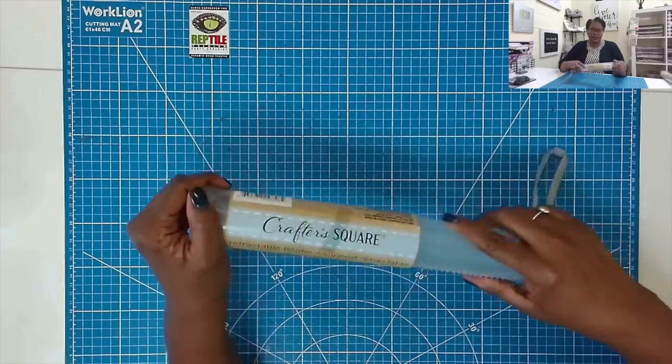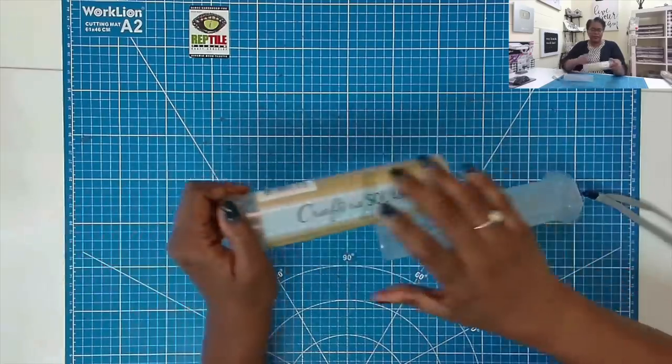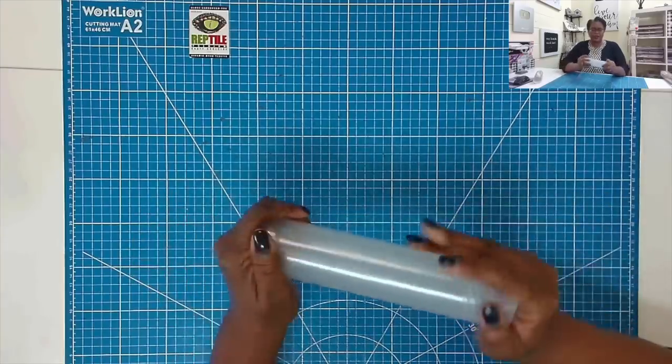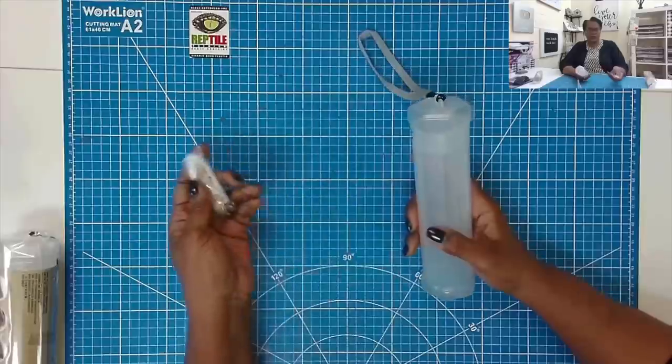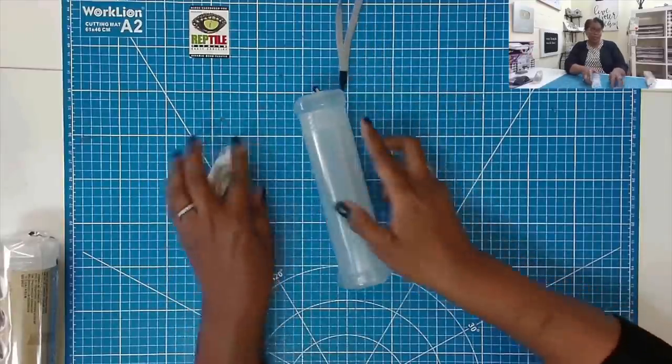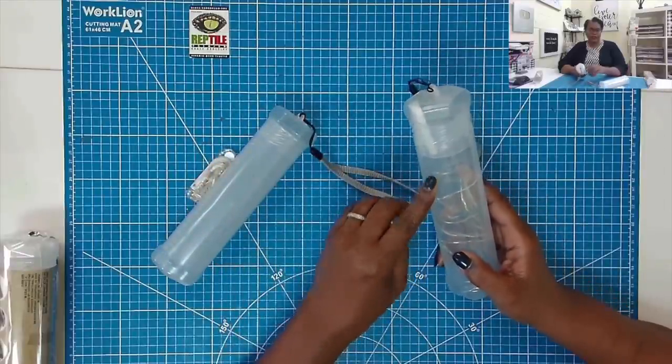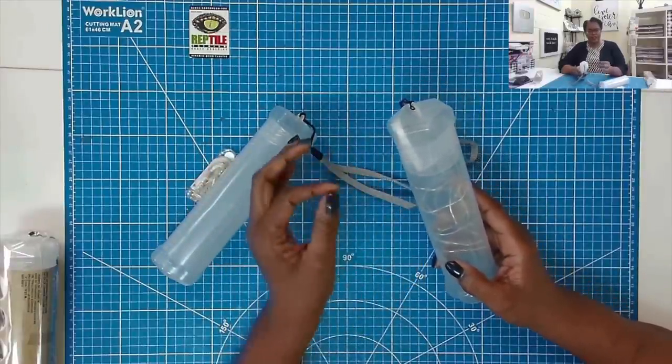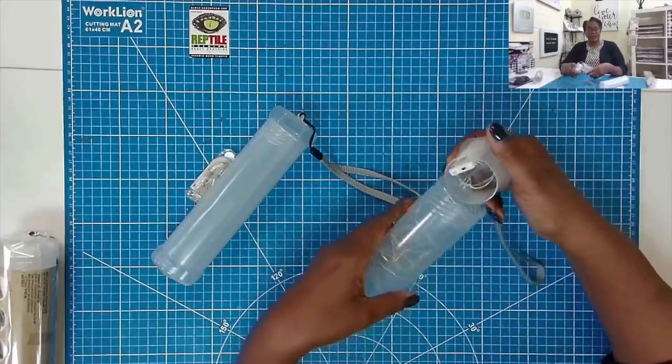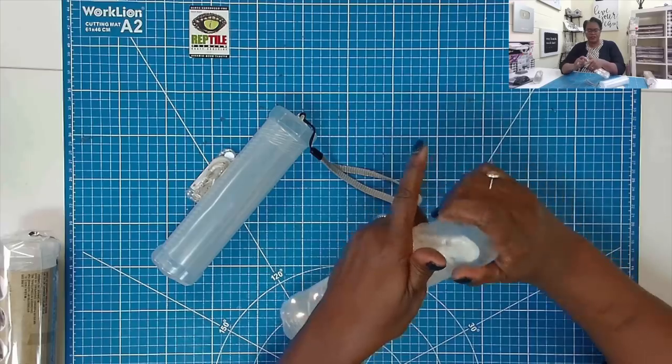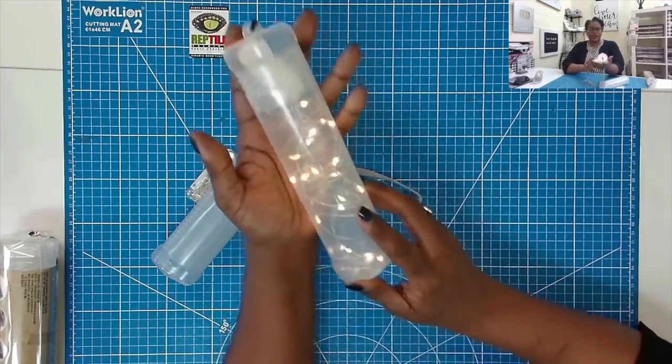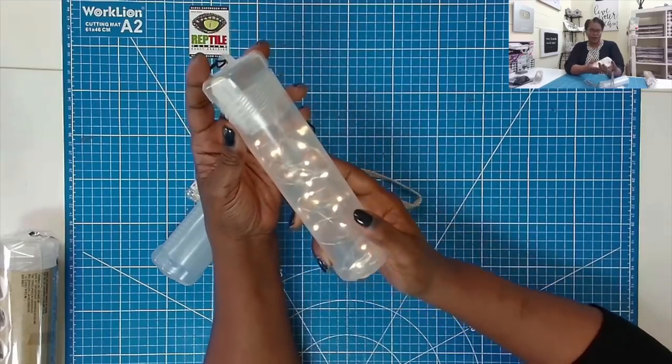So basically it just comes out like this. I'm going to go ahead and remove this. And now you can see how you can have your lights shining through. What I use for my lights are these little fairy lights that you guys have seen me use on the channel for quite a while now. And all I did was I trimmed down the inside portion so I would have easy access to the on and off switch of the lights like this.